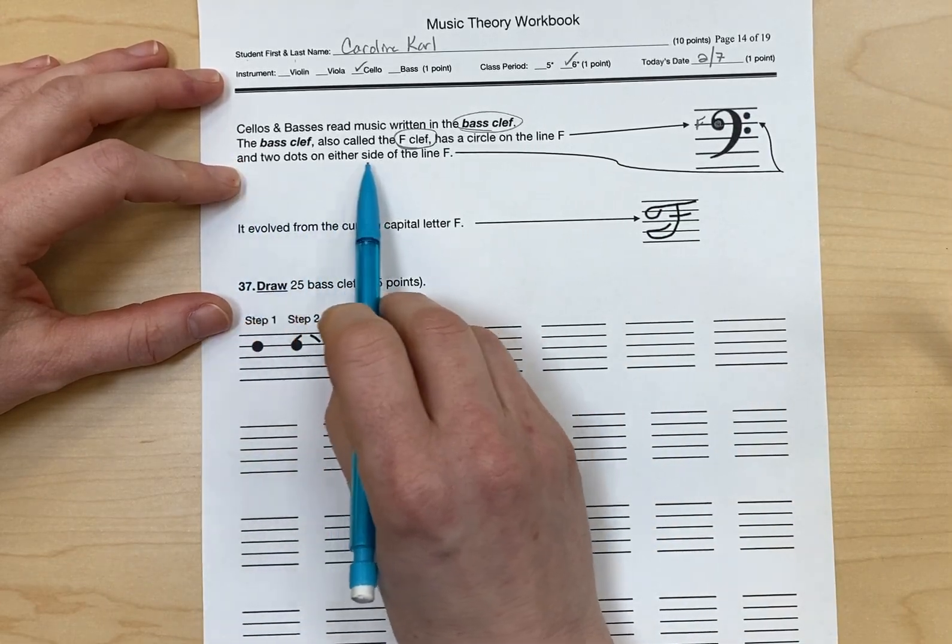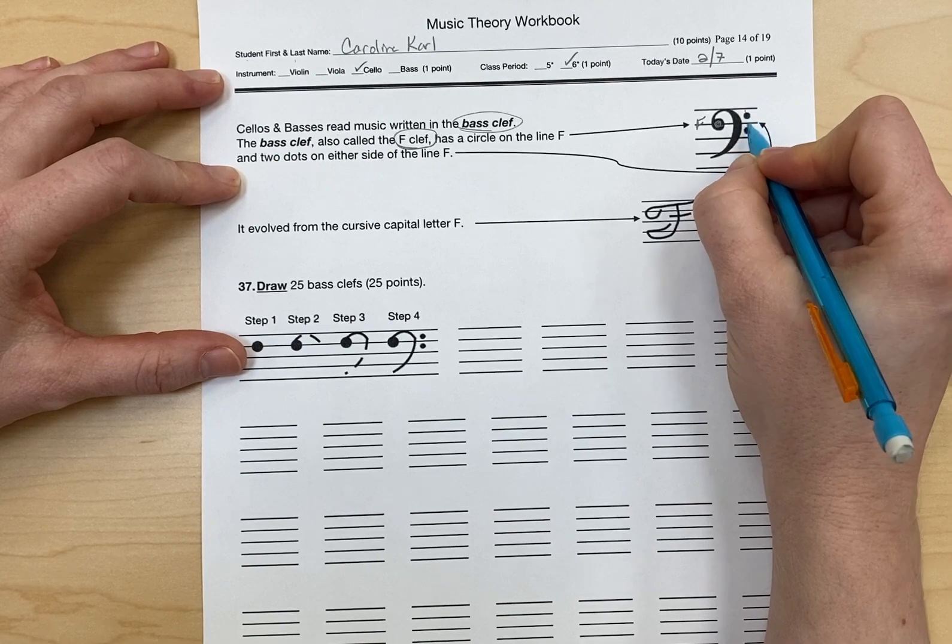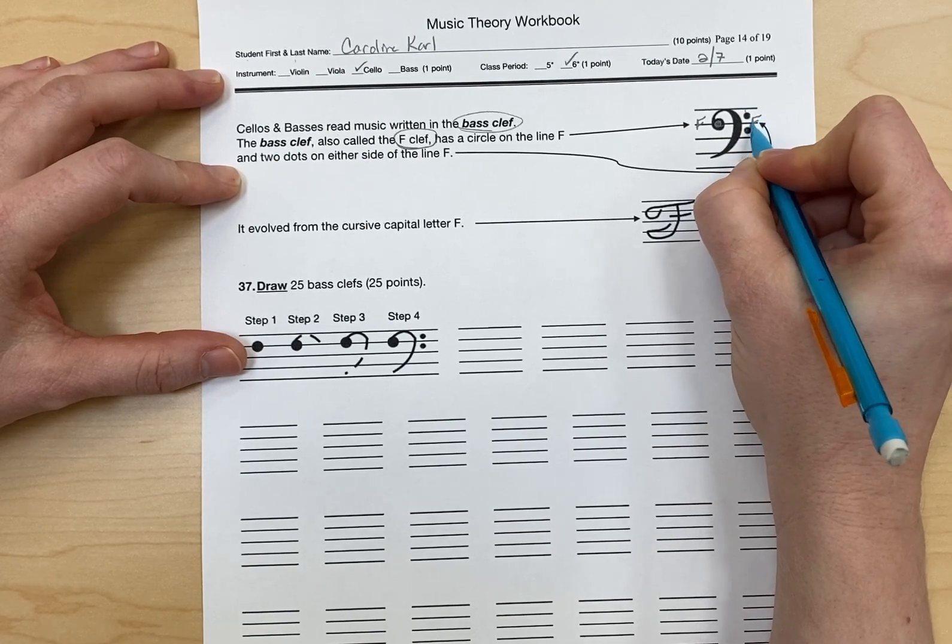And two dots on either side of the line. So it also has the dots on either side of this line, which is the line for F.